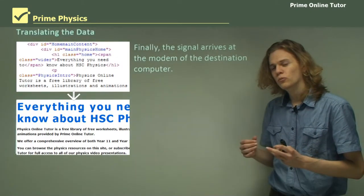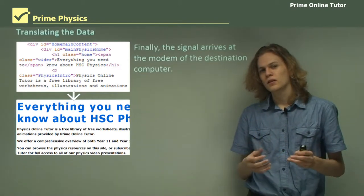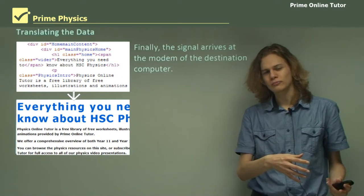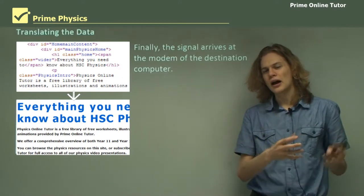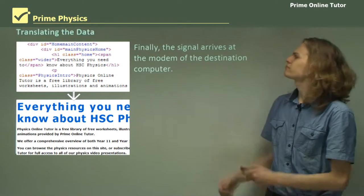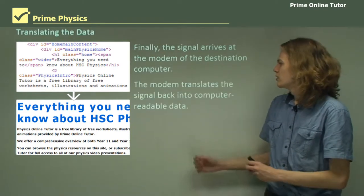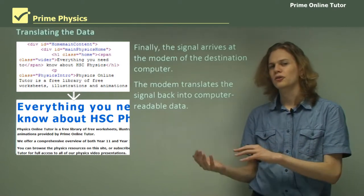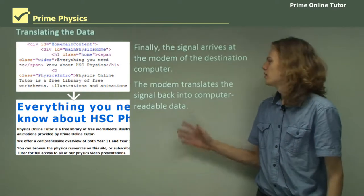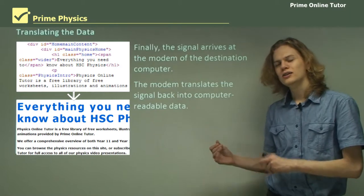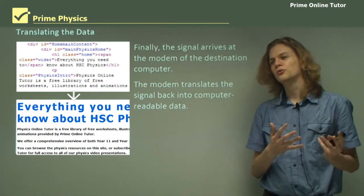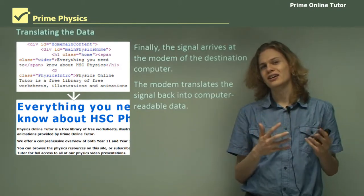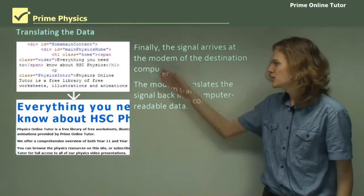Finally, once the signal arrives at the destination, the server that it arrives at can interpret the signal, figure out what to send back, and then send that response. Once the response gets back to the computer in the same way that the request went, the modem will translate the signal into computer-readable data. This will consist of ones and zeros, which can then be translated into letters, for example, as we can see at the top here.